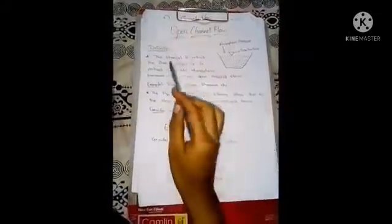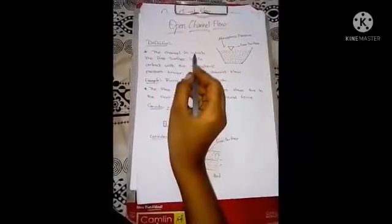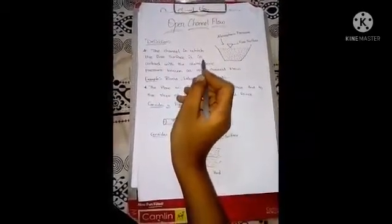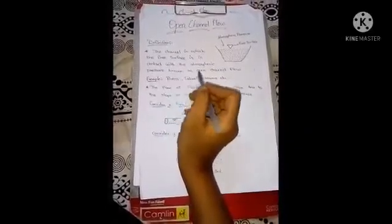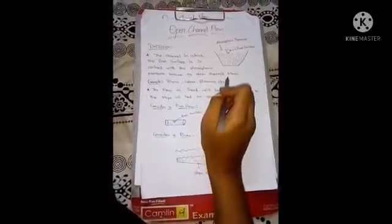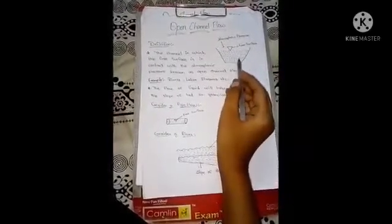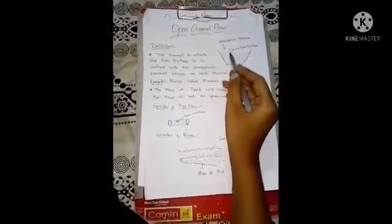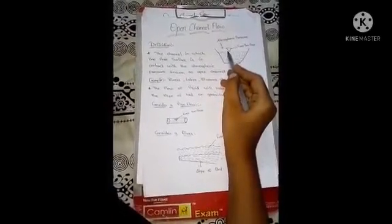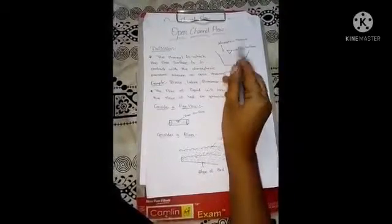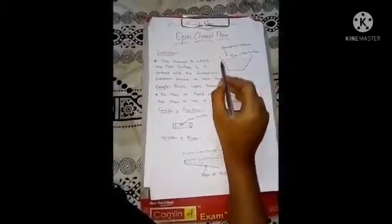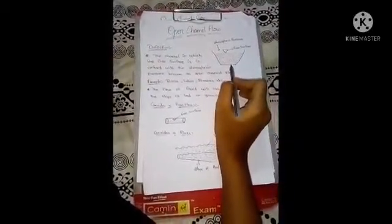Hello students, welcome to my channel. In this video we will be discussing open channel flow. The channel in which the free surface is in contact with the atmospheric pressure is known as open channel flow. If we consider a channel filled with water, it should have some free surface — indicated with Delta — and this free surface should be in contact with the atmospheric pressure. Then this channel is known as open channel flow.